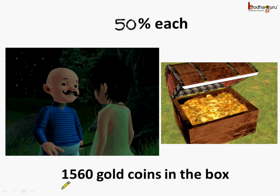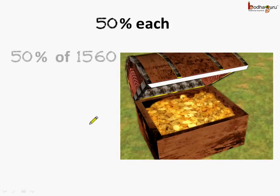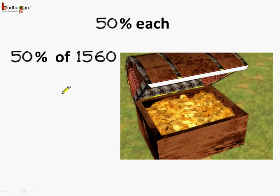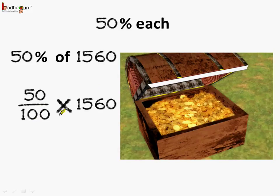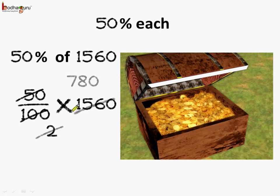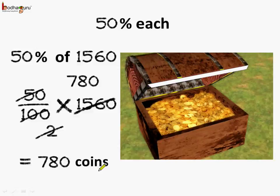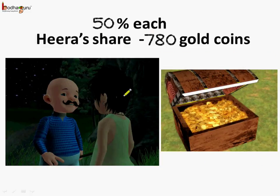Now they got 50% each. Suppose there were 1560 gold coins in the box. Then how much would each get? 50% each means 50% of the total which is 1560 coins. So 50 by 100 multiplied by 1560. Reducing: 2 fives are 10, 2 sevens are 14, 2 eights are 16, 2 zeros are 0. So the answer is equal to 780 coins.